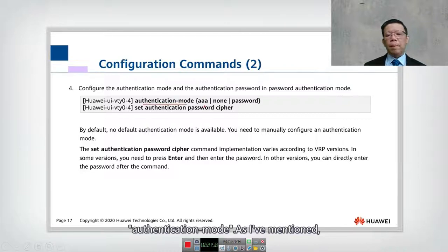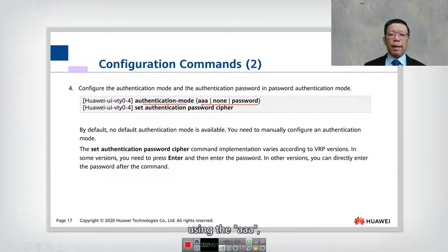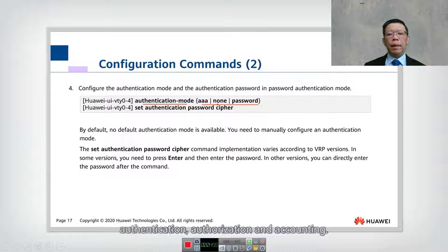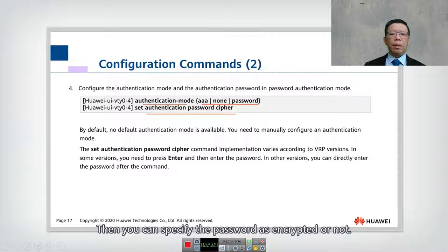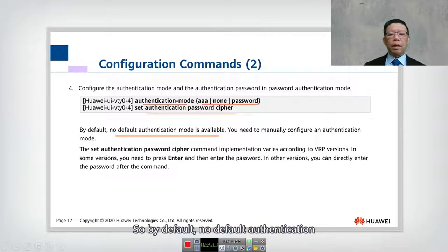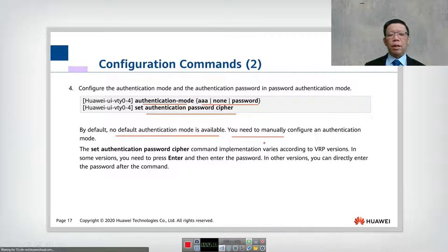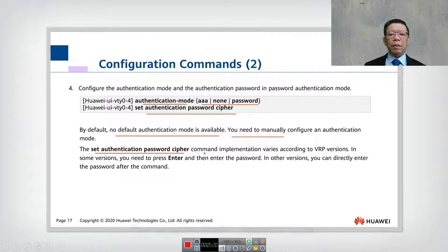To configure authentication, use the command 'authentication mode'. There are three authentication modes: AAA — which stands for Authentication, Authorization, and Accounting; 'none' — meaning the user does not need to be authenticated; and 'password' — where you specify a local password. You can set the password as encrypted or plain text. By default, no authentication is configured, so you need to manually set the authentication mode. The 'set authentication password cipher' command implementation varies according to the VRP version.